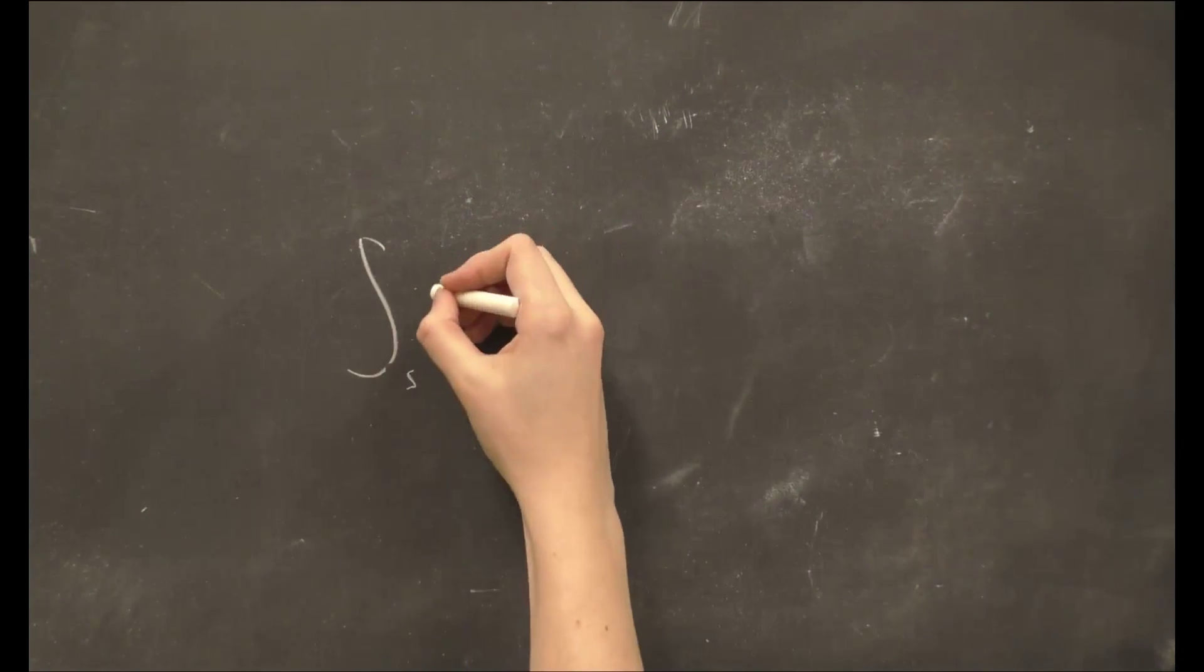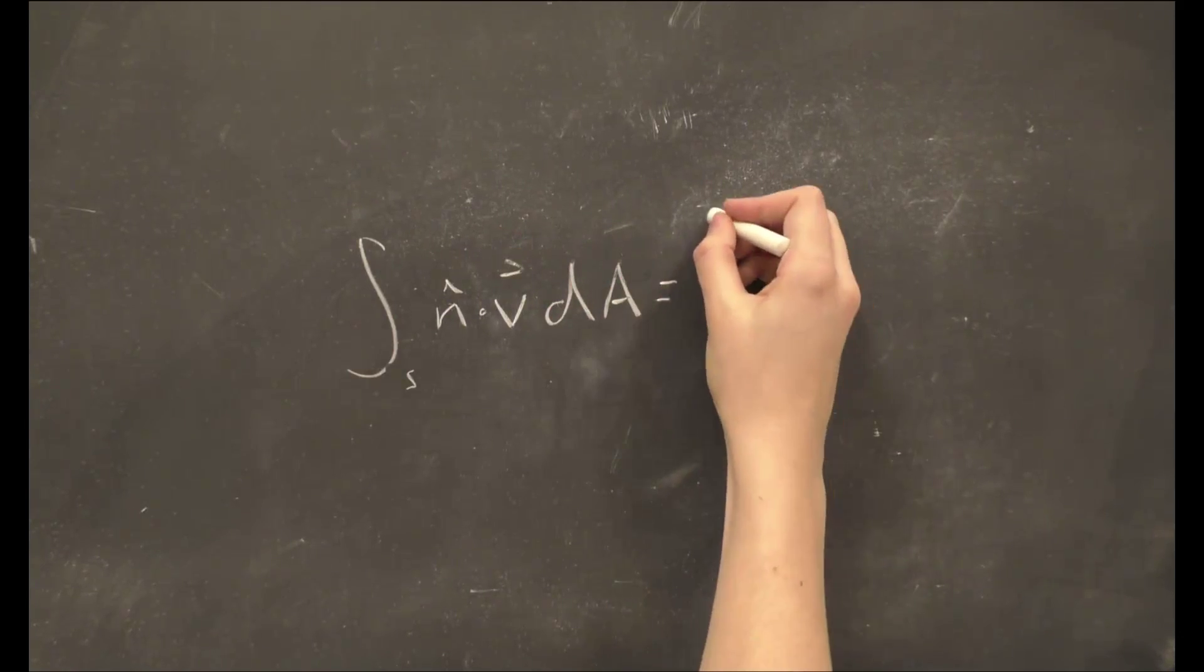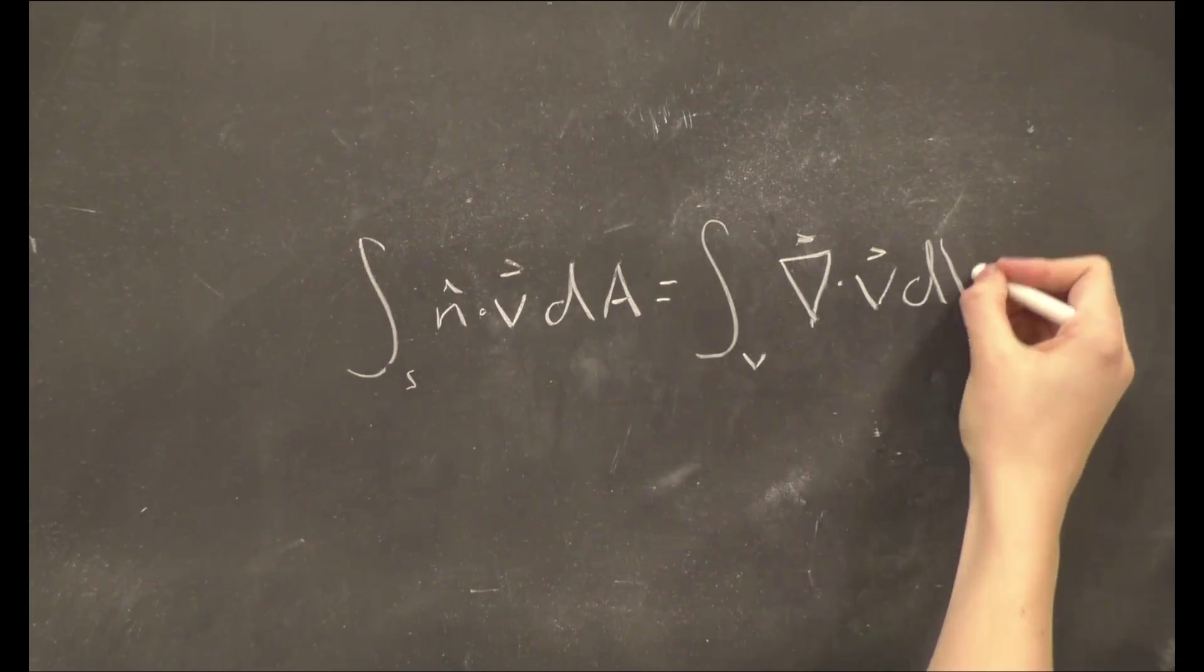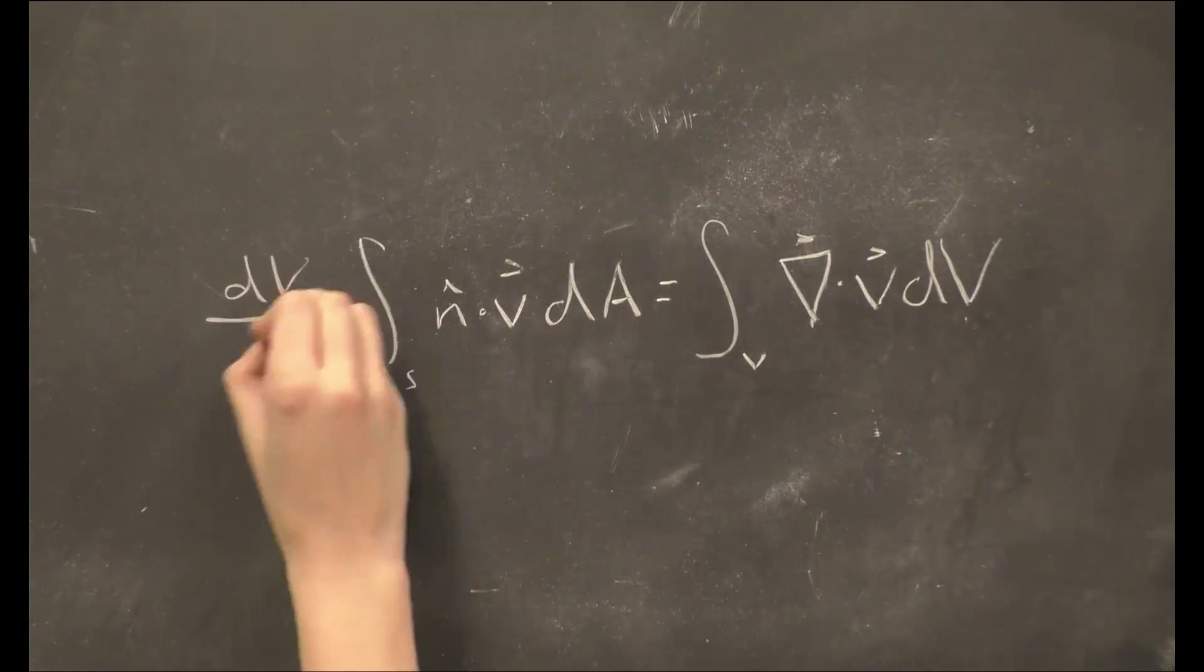Thus, we are finally able to say that the integral over the perimeter S that describes how volumes change over time is equal to the integral over the volume V of the divergence of the velocity.